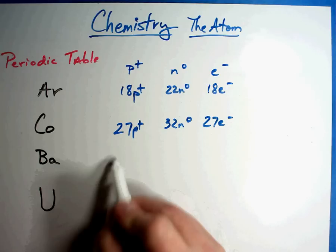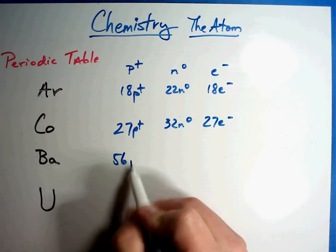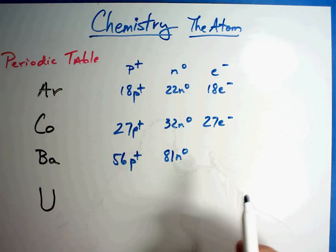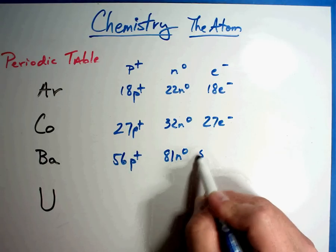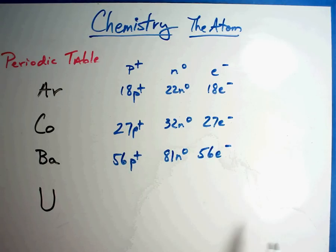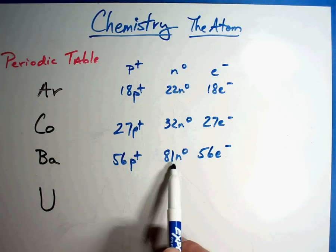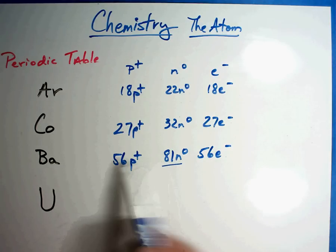Barium, 56 protons, 81 neutrons. Way different number that time, but it's right, 56 electrons. You'll notice the protons and neutrons were close here, but as you start getting bigger atoms, you typically get a lot more neutrons. And so that number is a lot further away.